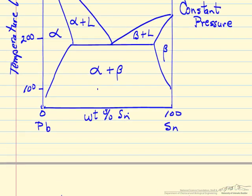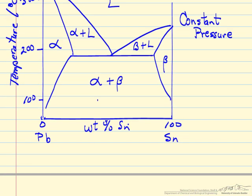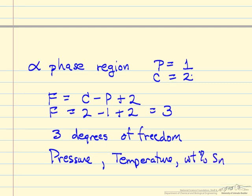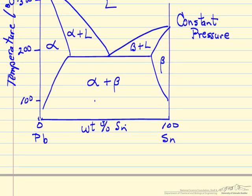So the particular diagram that we're looking at is constant pressure. So for the alpha phase we have 3 degrees of freedom before all the intensive variables are specified. One of those degrees of freedom is pressure, and we've already specified that in the diagram we're looking at is at a given pressure. The second one would be temperature, and then the third would be the concentration or the weight fraction, the weight percent of tin.